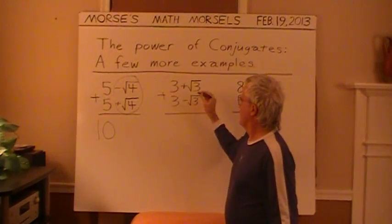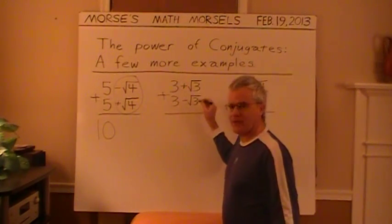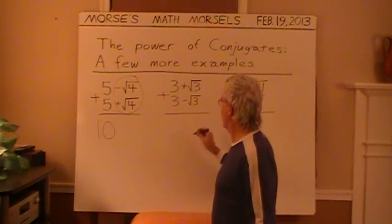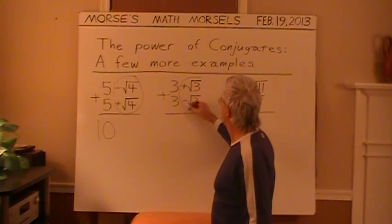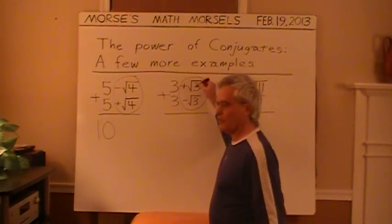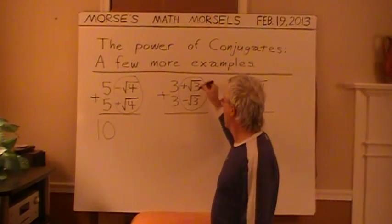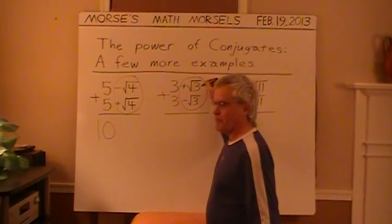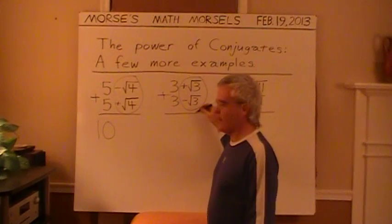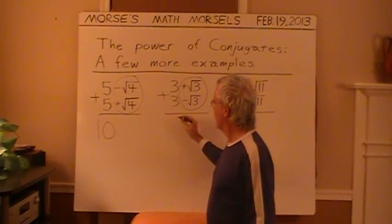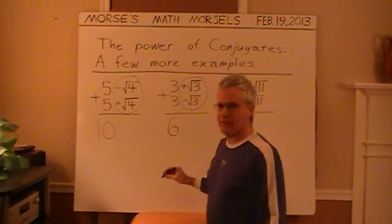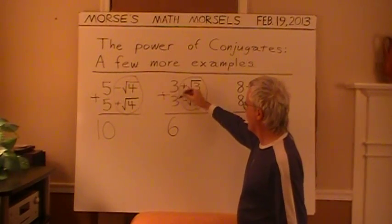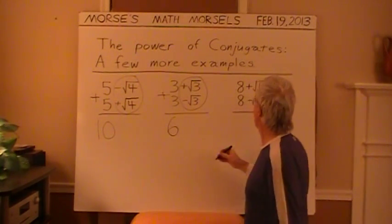If I add these conjugates, 3 plus the square root of 3 and 3 minus the square root of 3, a similar kind of situation. These two square root of 3, the radicals will cancel. We have a positive followed by its negative, or its additive inverse, leaving just the 3 plus the 3 whole numbers, and that's 6.